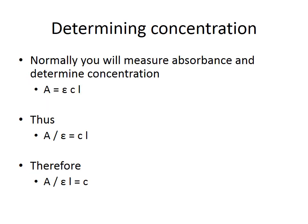Beer-Lambert's Law is normally used by measuring the absorption and then determining the concentration of an unknown. Rearranging A = εCL: dividing both sides by ε gives A/ε = CL, and then dividing both sides by L gives C = A / (εL). You can simply plug in the values from your spectrophotometer along with the molar absorption coefficient at that wavelength in order to calculate the concentration of your unknown sample.